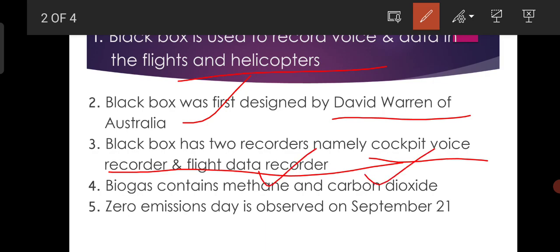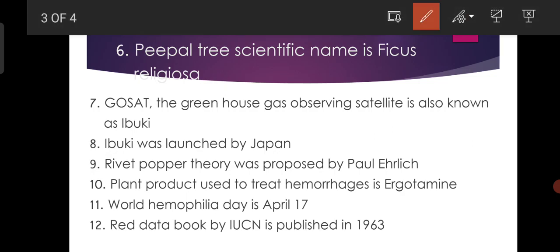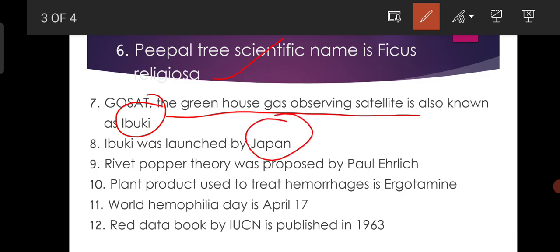Biogas contains methane and carbon dioxide. Zero Emissions Day is observed on September 21st. People tree, scientific name Ficus religiosa. GOSAT, the greenhouse gas-observing satellite, is also known as Ibuki. Ibuki was launched by Japan. Rivet Popper theory was proposed by Paul Ehrlich.